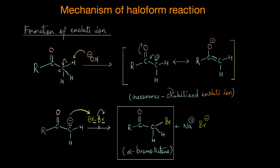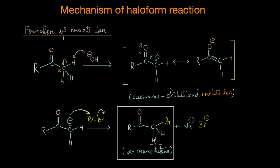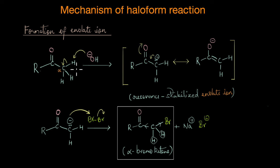In this case, since we have taken bromine as the example, we get an alpha-bromo ketone. Interestingly, this alpha-bromo ketone is much more acidic than the starting methyl ketone, because the alpha hydrogens are now between two electron-withdrawing groups — an electronegative bromine atom and an electron-withdrawing C=O group. With both pulling electron density in different directions, these hydrogen atoms become much more acidic than the alpha hydrogens of the original methyl ketone.